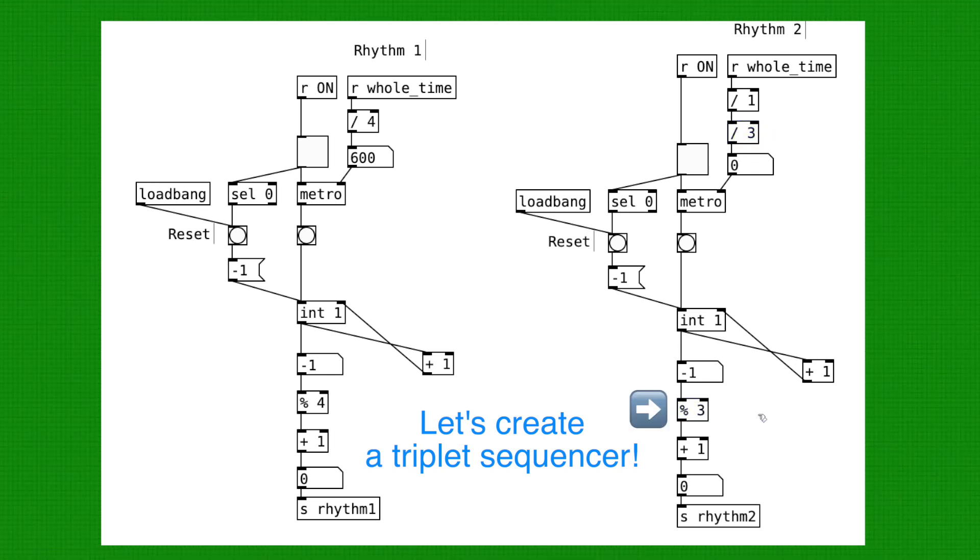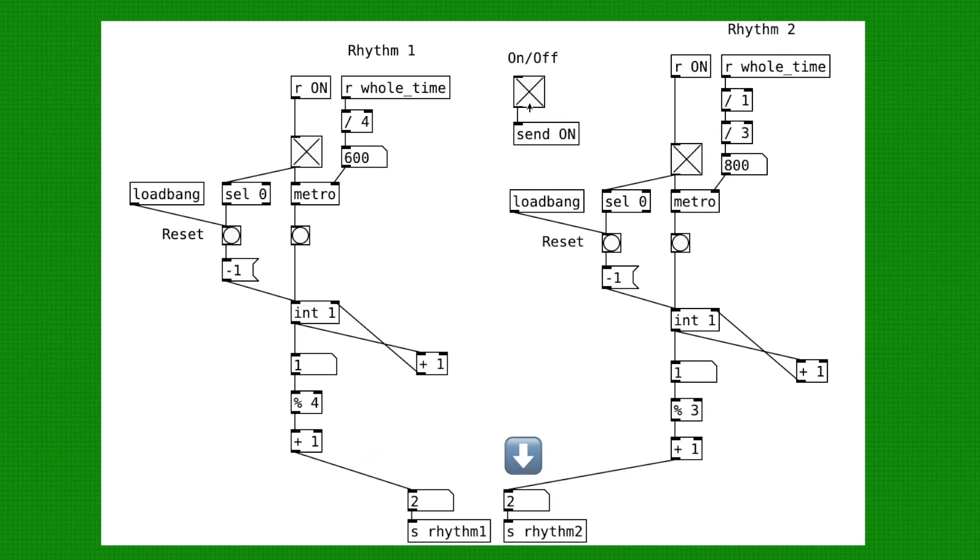And we only need to change one more thing. We change this modulo to a 3 so that we have the counter loop from 1 to 3 instead of 1 to 4. Okay, that's it. Let's have a listen.